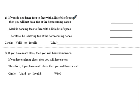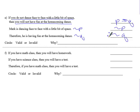If you do not dance face to face with a little bit of space, then you will not have fun at the homecoming dance. One thing I want to point out here. Just because the word not appears in here does not mean it is negated. This is just my P statement. So I'm still going to say P implies Q even though the word not is there. Mark is dancing face to face with a little bit of space. So that is not P. Therefore, he is having fun at the homecoming dance. That's not Q. So I negated. P, Q became not P, not Q. That is invalid. That's an inverse error.